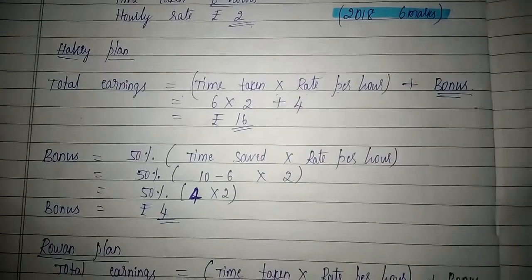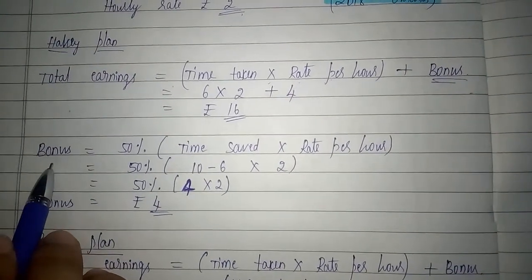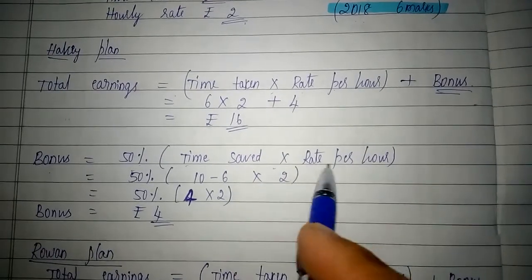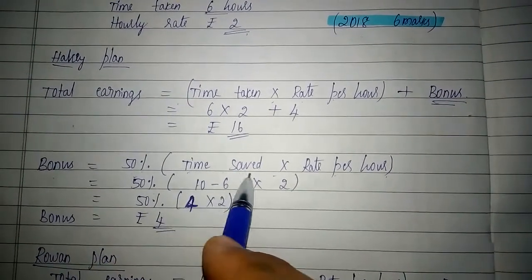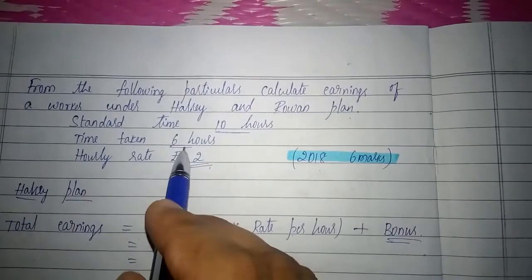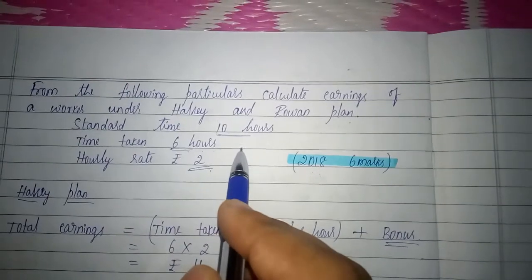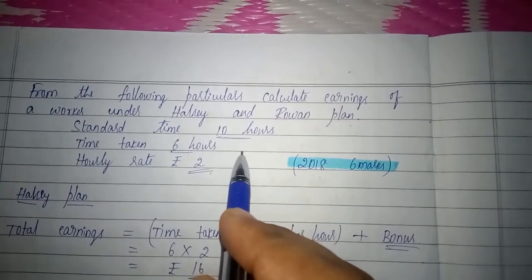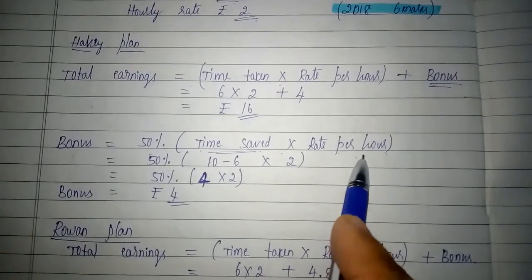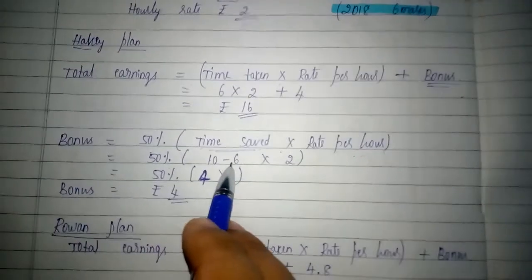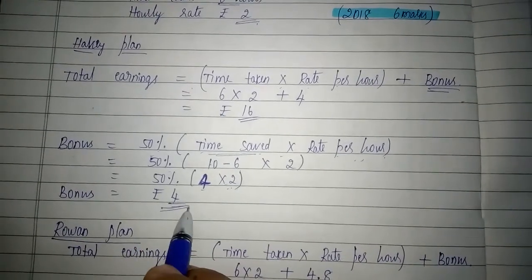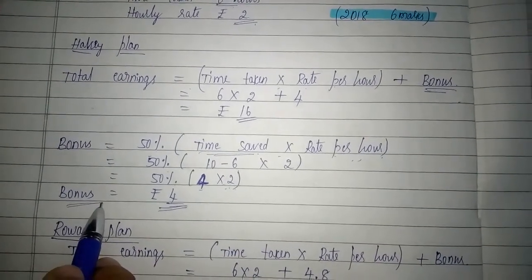First, let us calculate bonus under the Halsey system. The bonus is calculated using the formula: 50% of time saved multiplied by rate per hour. Time saved is calculated by deducting time taken from standard time — that is 10 minus 6, which equals 4 hours. So, 50% into 4 hours into Rs. 2 per hour: 4 into 2 equals 8 rupees, and 8 into 50% equals Rs. 4. This is the bonus under the Halsey plan.